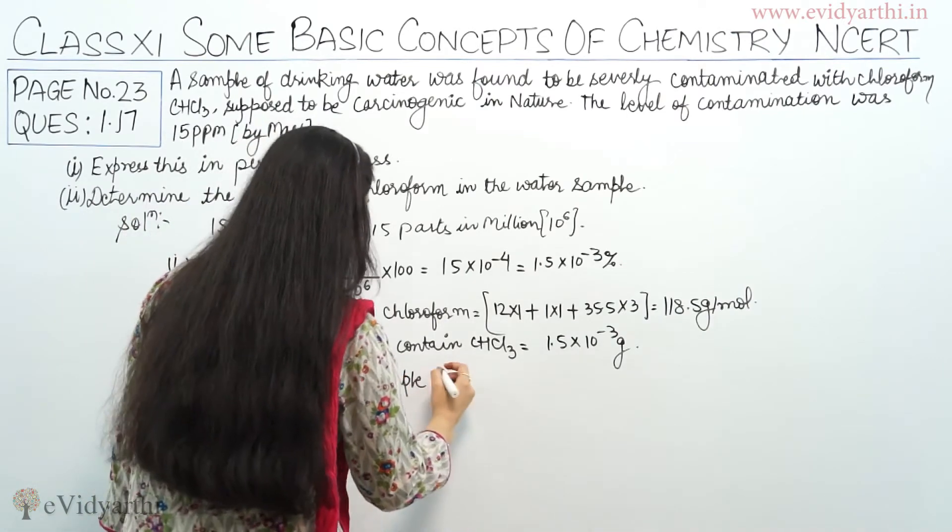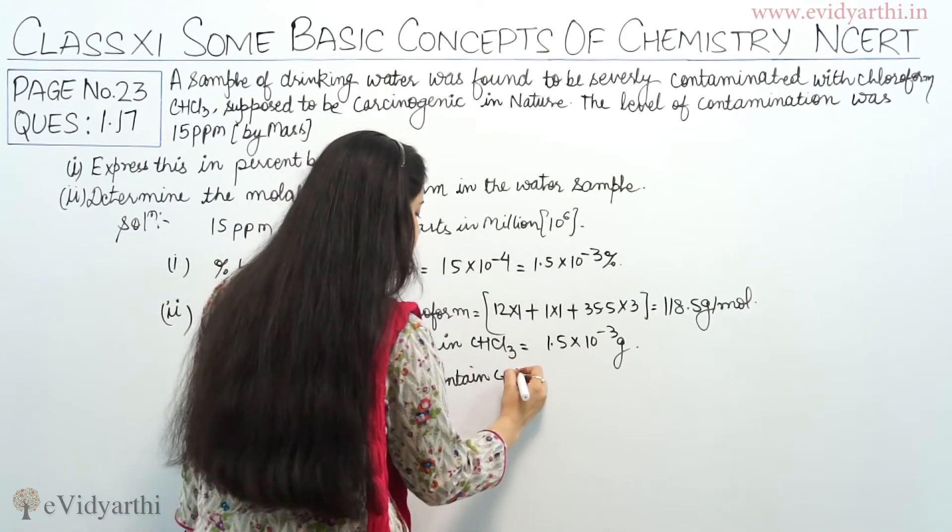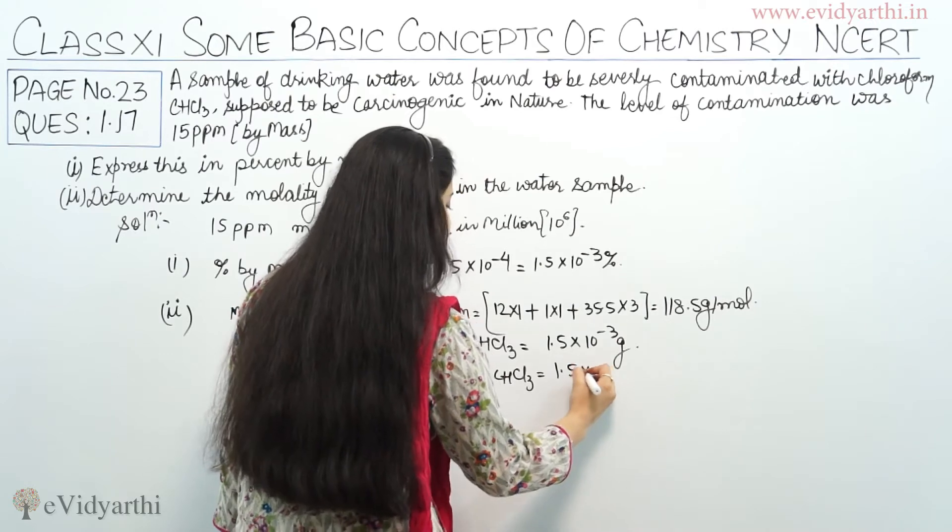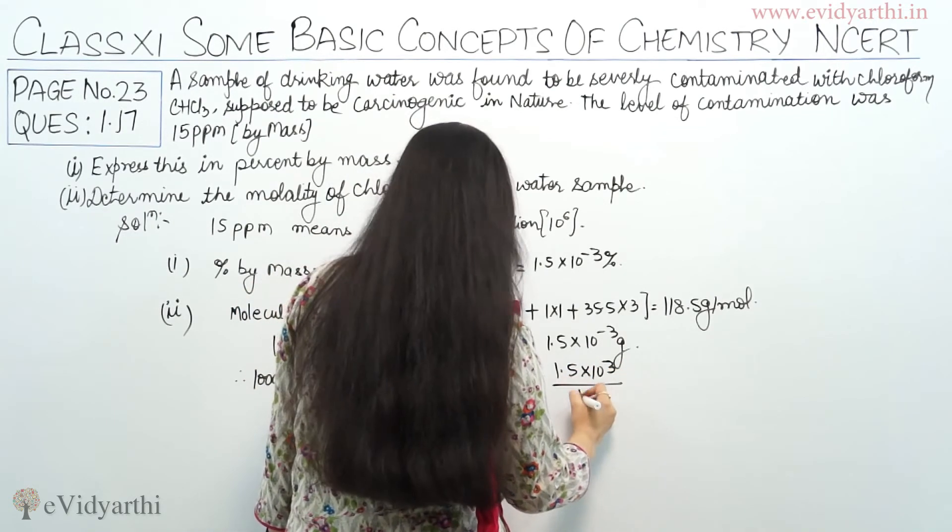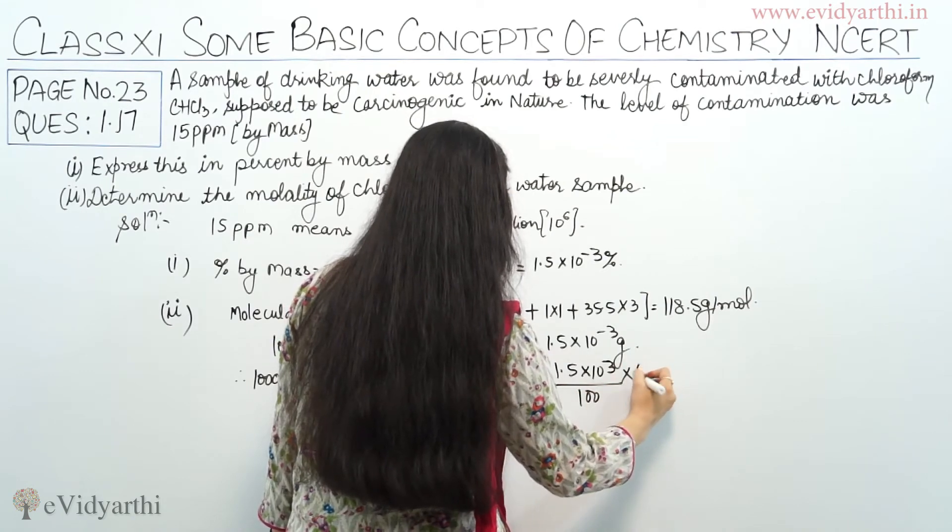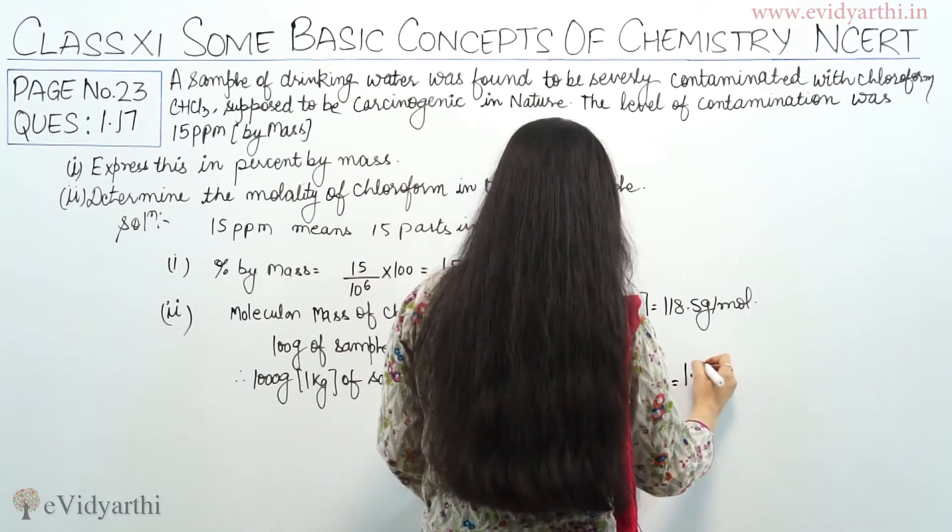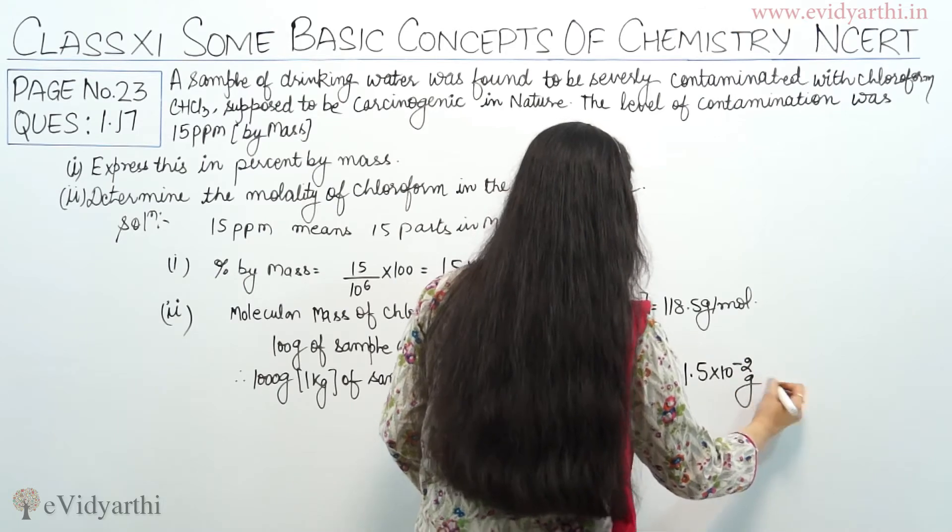Therefore 1000 gram or we can say 1 kg of sample contains CHCl3, that means chloroform, equals to 1.5 into 10 raised to power minus 3 divided by 100 into 1000, which equals 1.5 into 10 raised to power minus 2 grams.